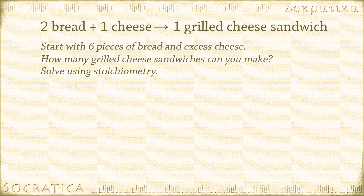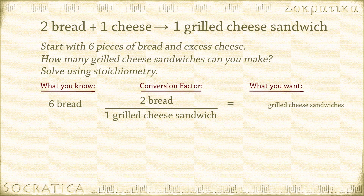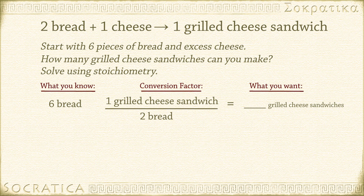Back to our problem. Write down what you know and what you want to get at the end, and leave a blank space for a conversion factor. Six pieces of bread gives us some number of grilled cheese sandwiches. We need a conversion factor with pieces of bread and number of grilled cheese sandwiches in it — two bread over one grilled cheese sandwich equals one. We need our units to cancel, so we'll invert our conversion factor. That's the great thing about conversion factors: they equal one, so you can flip them and they'll still equal one. So: six pieces of bread × (one grilled cheese sandwich / two pieces of bread). Pieces of bread cancels. Six over two equals three grilled cheese sandwiches.